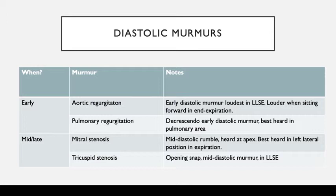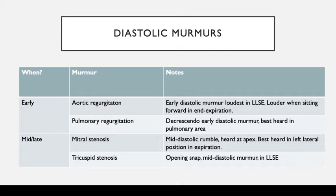The next thing is diastolic murmurs — there are fewer here, which is hopefully reassuring. Aortic regurgitation is an early diastolic murmur that's loudest at the lower left sternal edge. That is why during cardiac exam we ask the patient to sit up, lean forward, place the stethoscope on the third intercostal space on the left, and ask them to breathe out and hold their breath — to accentuate an AR murmur. Pulmonary regurgitation is a decrescendo early diastolic murmur best heard in the pulmonary area. Mitral stenosis is called a mid-diastolic rumble — quite soft, best heard at the apex, with the patient in the left lateral position during expiration.